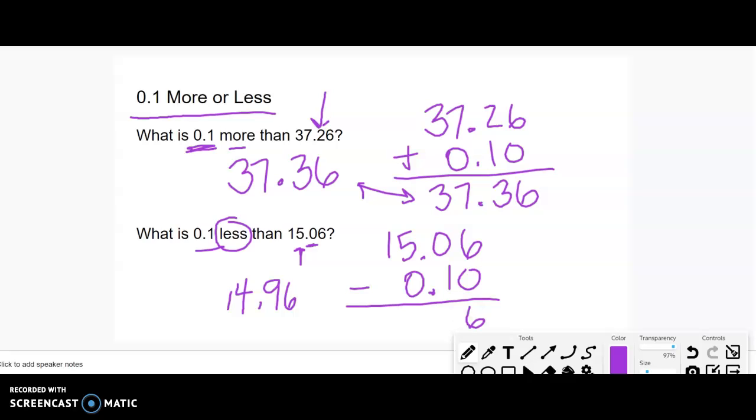6 minus 0 is 6. I can't do 0 minus 1, so I need to borrow from the 5. That becomes a 10. 10 minus 1 is 9, and we get 14.96. Again, same thing. If you have trouble visualizing it, just write it down. There's nothing wrong with that, depending on how comfortable you are with mental math.